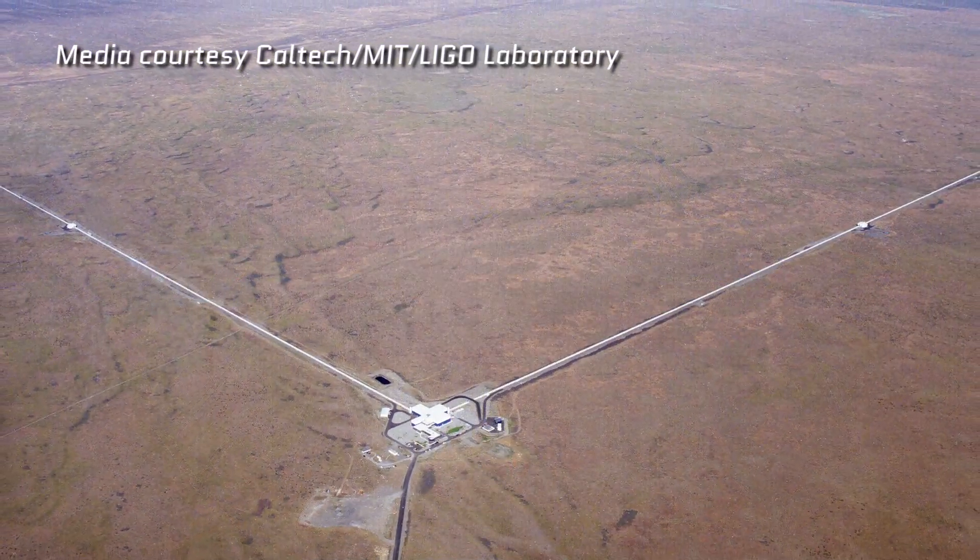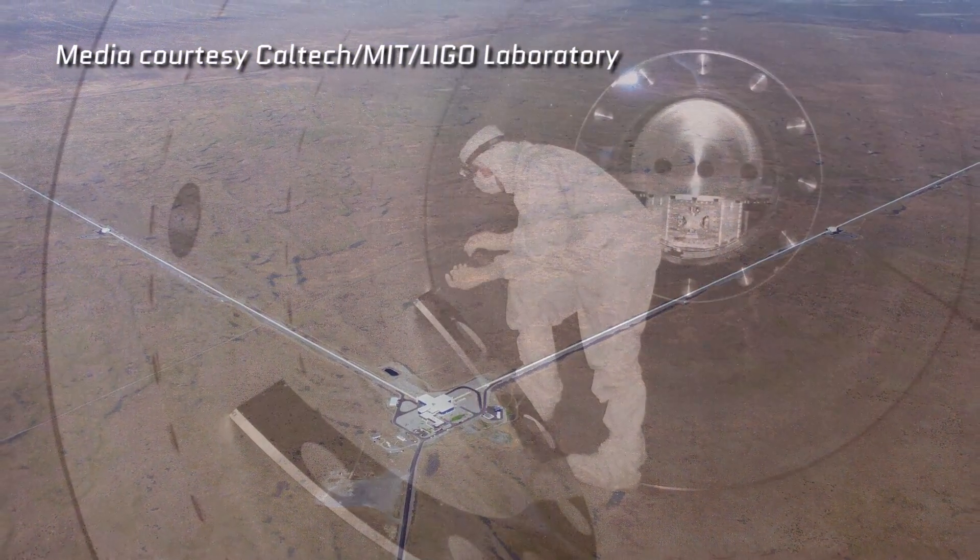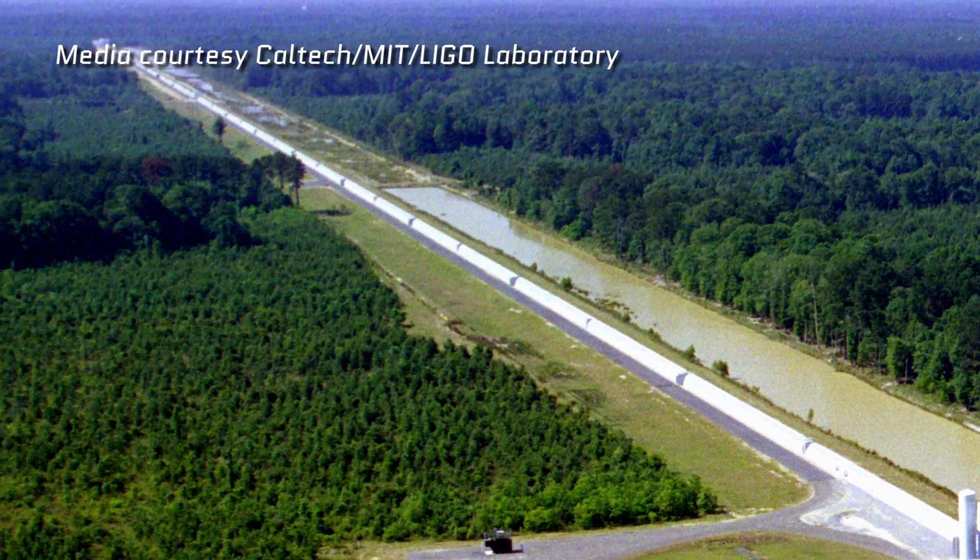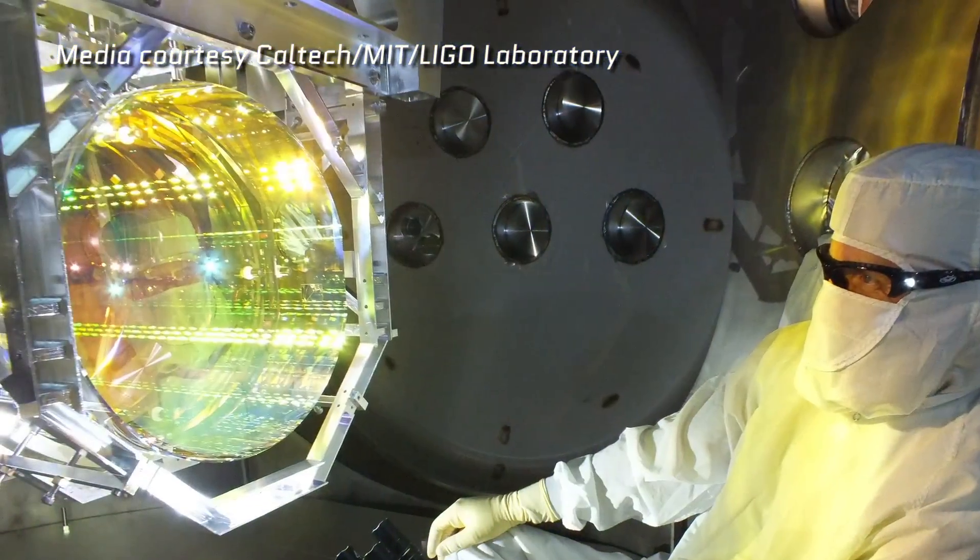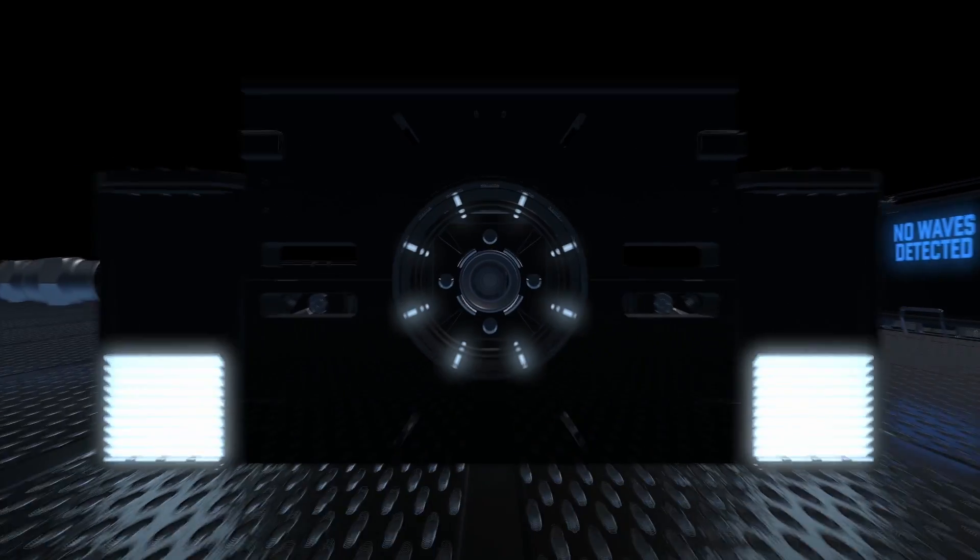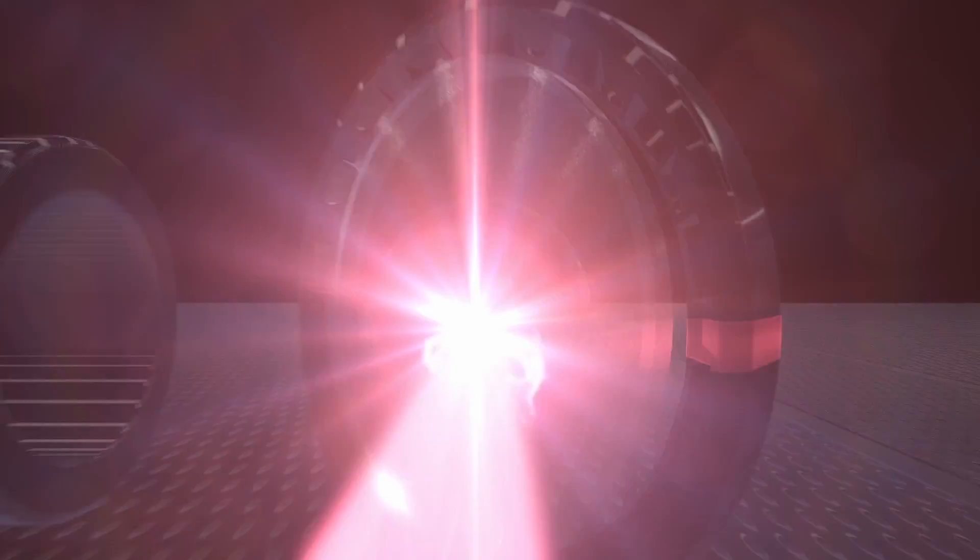Each of these detectors is built in an L shape of vacuum tubes. Those tubes are two and a half miles long, or four kilometers. At the end of each tube is a mirror, and at the crux of the L is a beam splitter. So they fire a laser through that splitter.